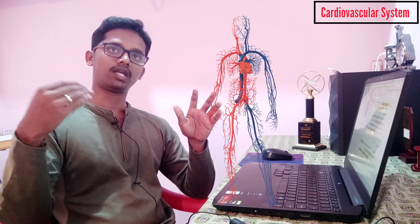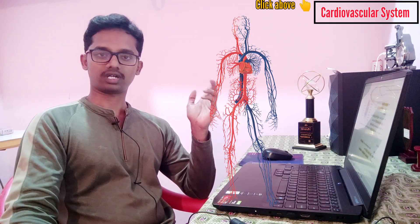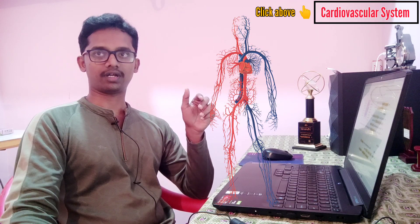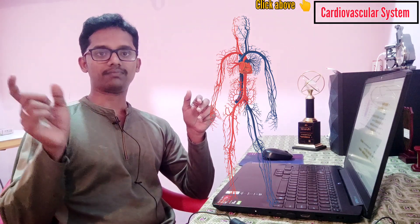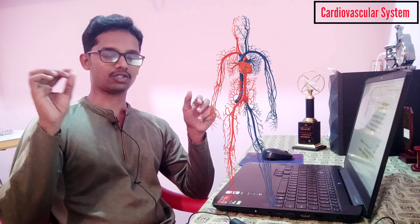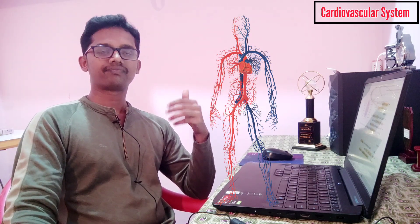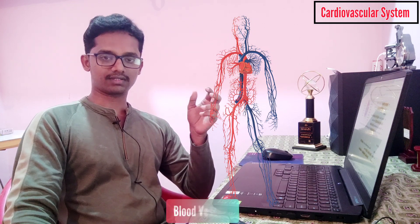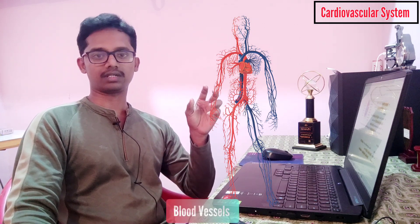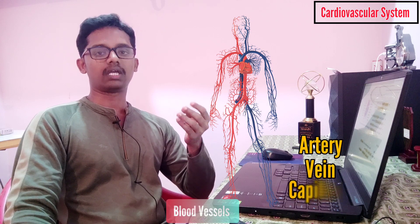We have already uploaded a video on the anatomy of the heart — the parts of the heart. You can see the link below, in the card. Click the video to see the anatomy of the heart. As for blood vessels, there are three types: artery, vein, and capillary.